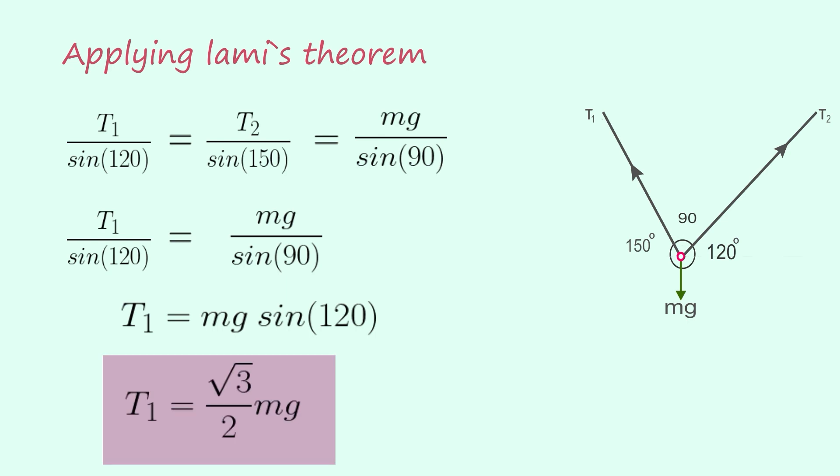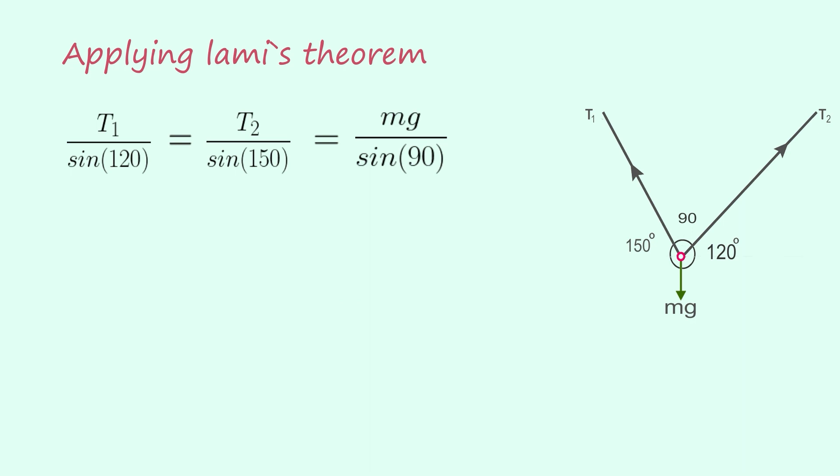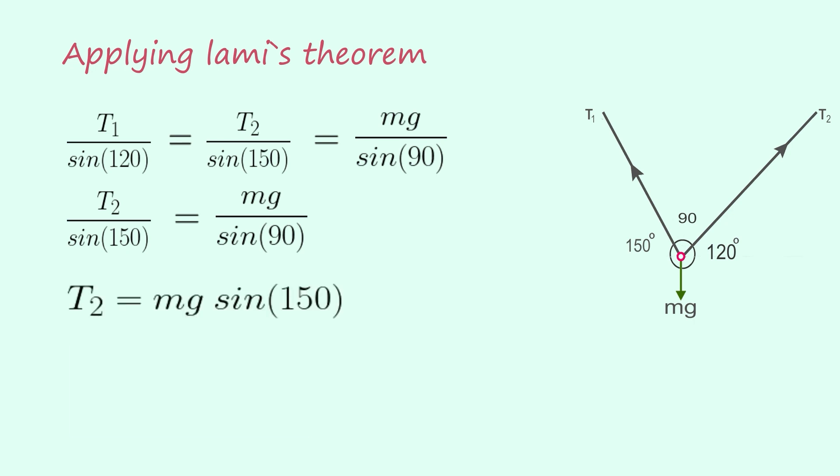Now finding T2, T2 by sin 150 equals Mg by sin 90. T2 equals Mg sin 150, that is T2 equals Mg by 2.